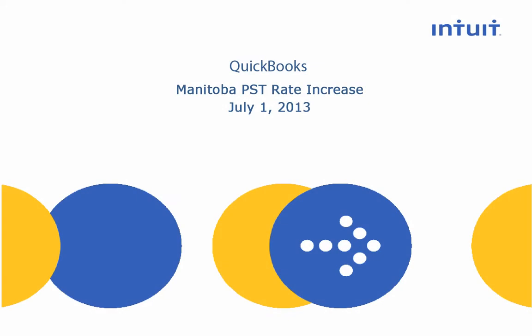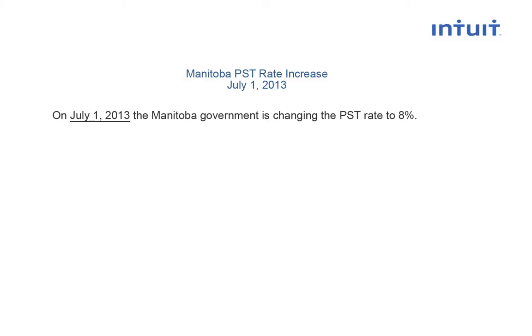Manitoba PST Rate Increase Effective July 1, 2013 — Editing PST Tax Items. On July 1, 2013, the Manitoba government is changing the PST rate to 8%.